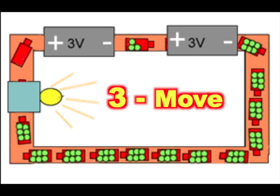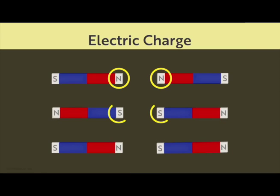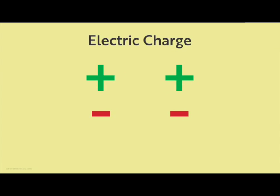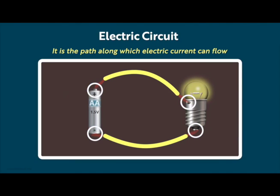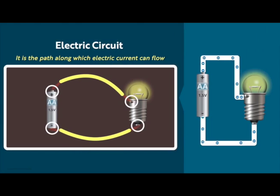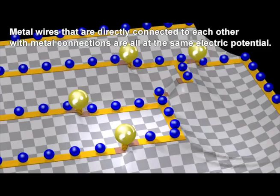Three: Move. Electric charges move. In a battery, electricity moves in circle from negative side to the plus side. While it moves, electricity does work on light and makes lights glow.